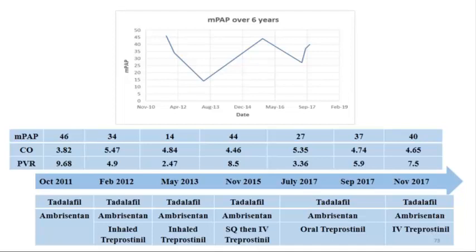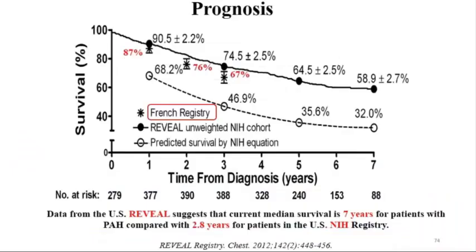There is no stable pulmonary hypertension patient. We have a patient followed since 2011 whose pulmonary artery pressure was elevated, treated, and came down—but you have to keep a close eye because PH may progress again later. You have to switch and escalate therapy with each follow-up to keep the disease under control.